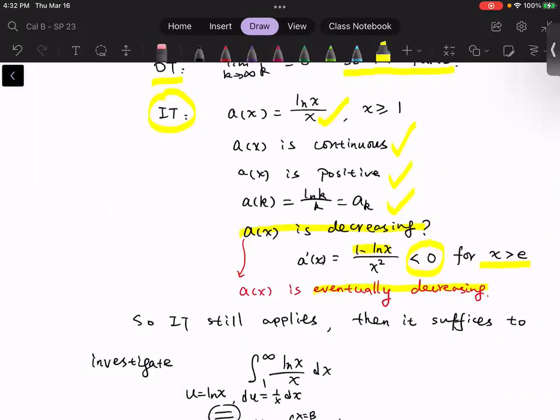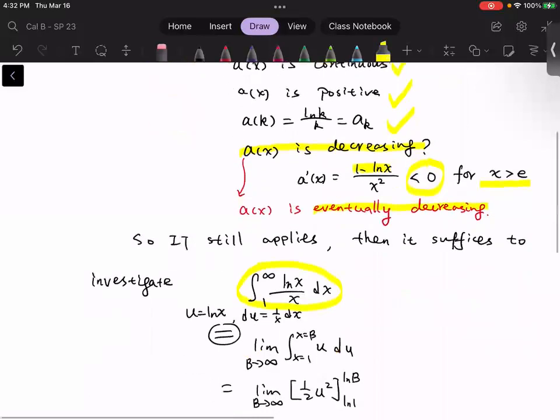Now, based on the statement of the integral test, the original series and this improper integral have almost equivalent convergence or divergence behavior. So we just need to evaluate this integral.